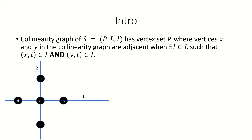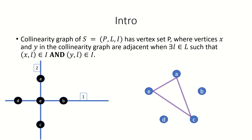As an example, let's find the collinearity graph for this incident structure. First, create a vertex for each point in the incident structure. Next, link two vertices when they're incident to the same line in the incident structure. Points A, E, and C are all incident to line 2 in the incident structure, so vertices A, E, and C will be mutually adjacent in the collinearity graph.